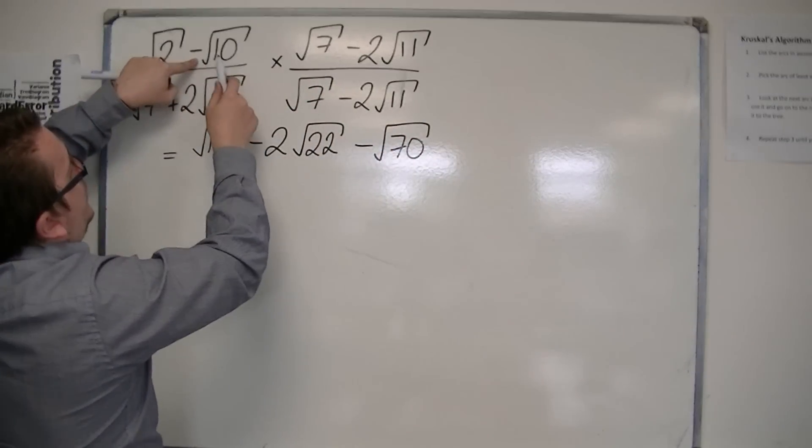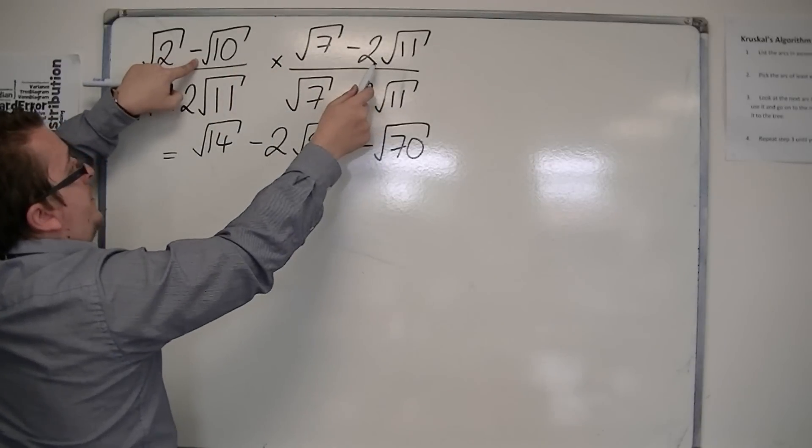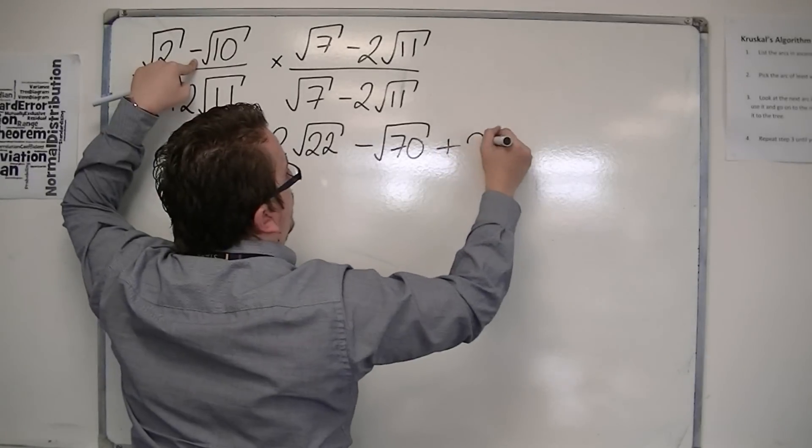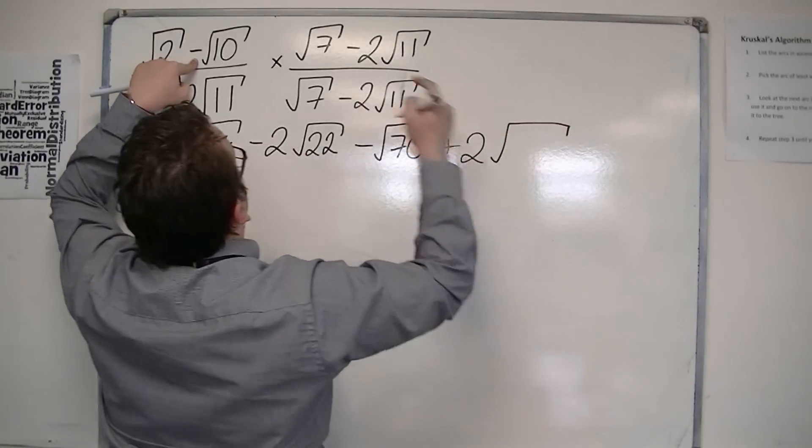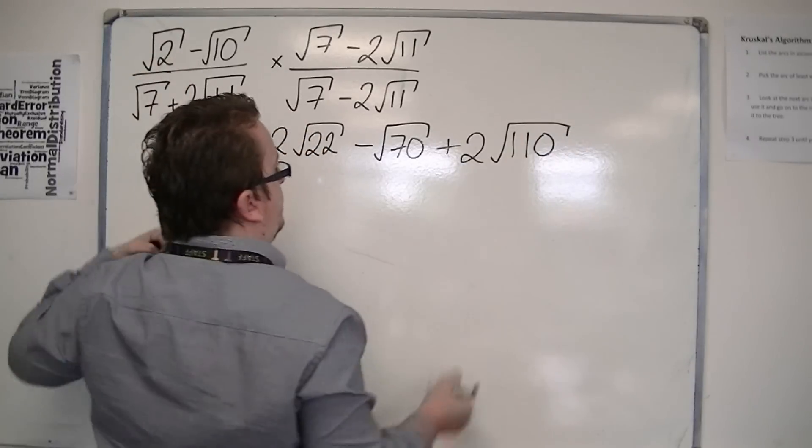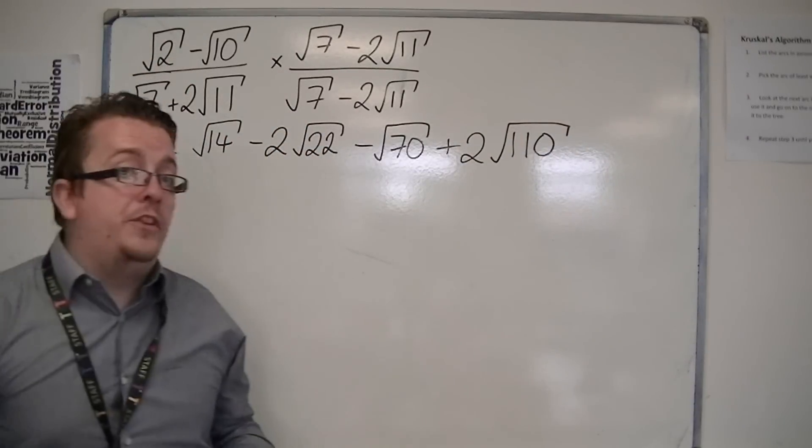And then you've got minus root 10 times minus 2 root 11. So the 2 minuses make a plus. You've got the 2, and you've got root 10 times root 11 is root 110. So that's the numerator.